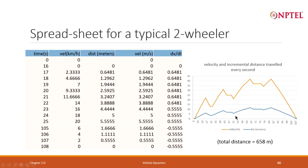Remember, distance is also travelled during deceleration — I keep on adding the incremental distance. This is the incremental velocity and incremental distance at each step. Integrating all of it gives the total distance travelled: 658 meters.